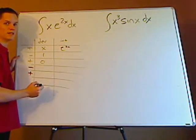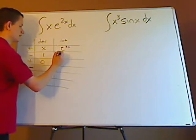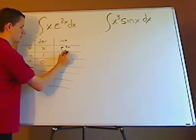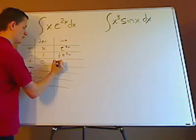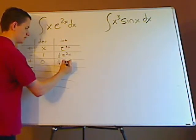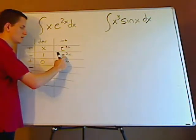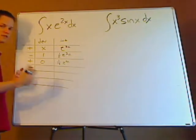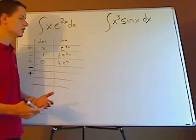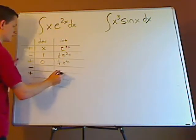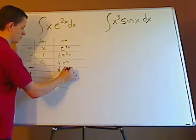Now what's the anti-derivative of e to the 2x? Yes, it's going to be one half e to the 2x. What's the anti-derivative of that? One fourth e to the 2x, right? Because whenever you integrate it, you need the derivative of this. So you need to put the two in here. The way that you balance out the two is you multiply it by one half. Two times one half is one. So that's going to keep on going like that.